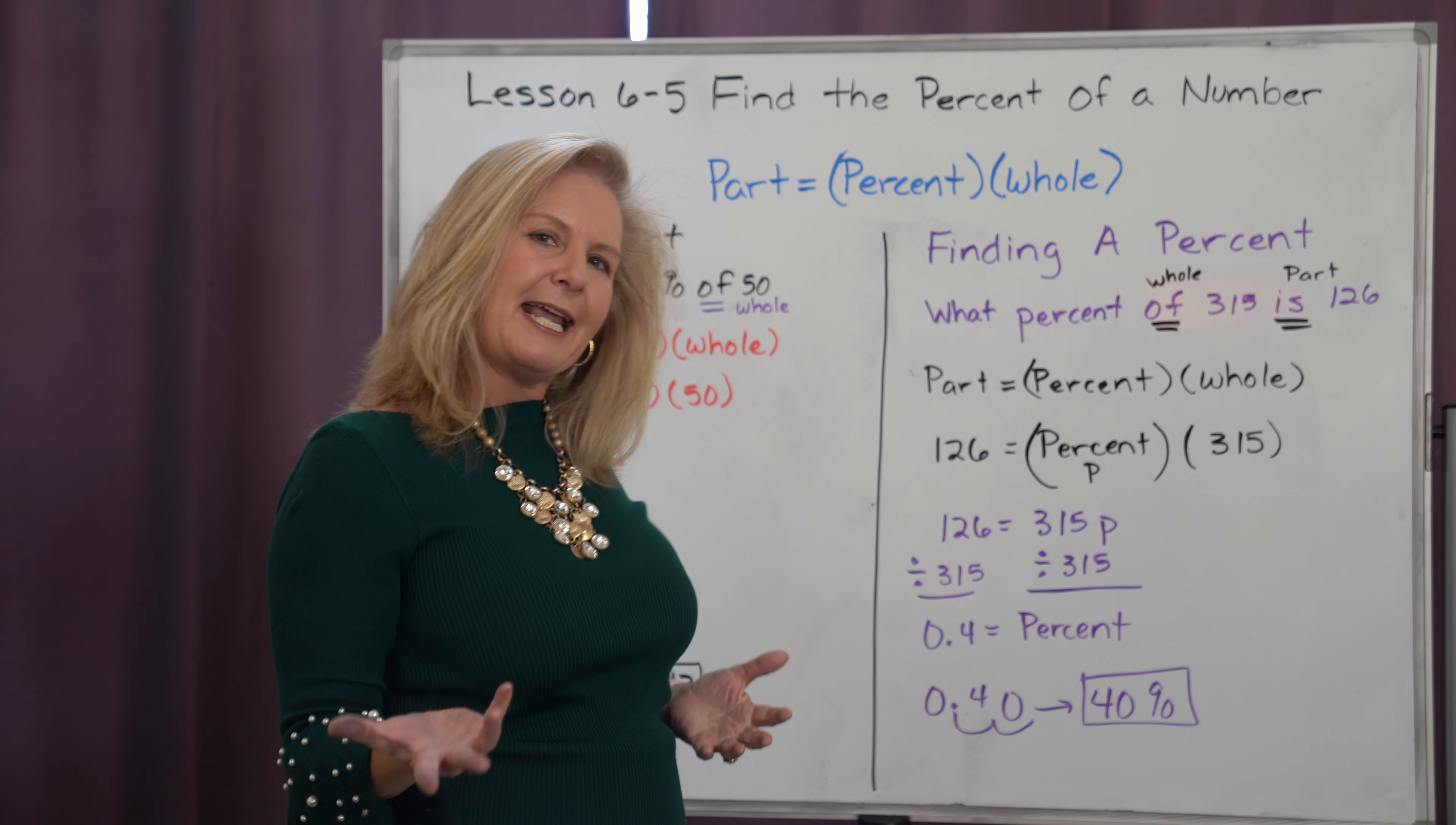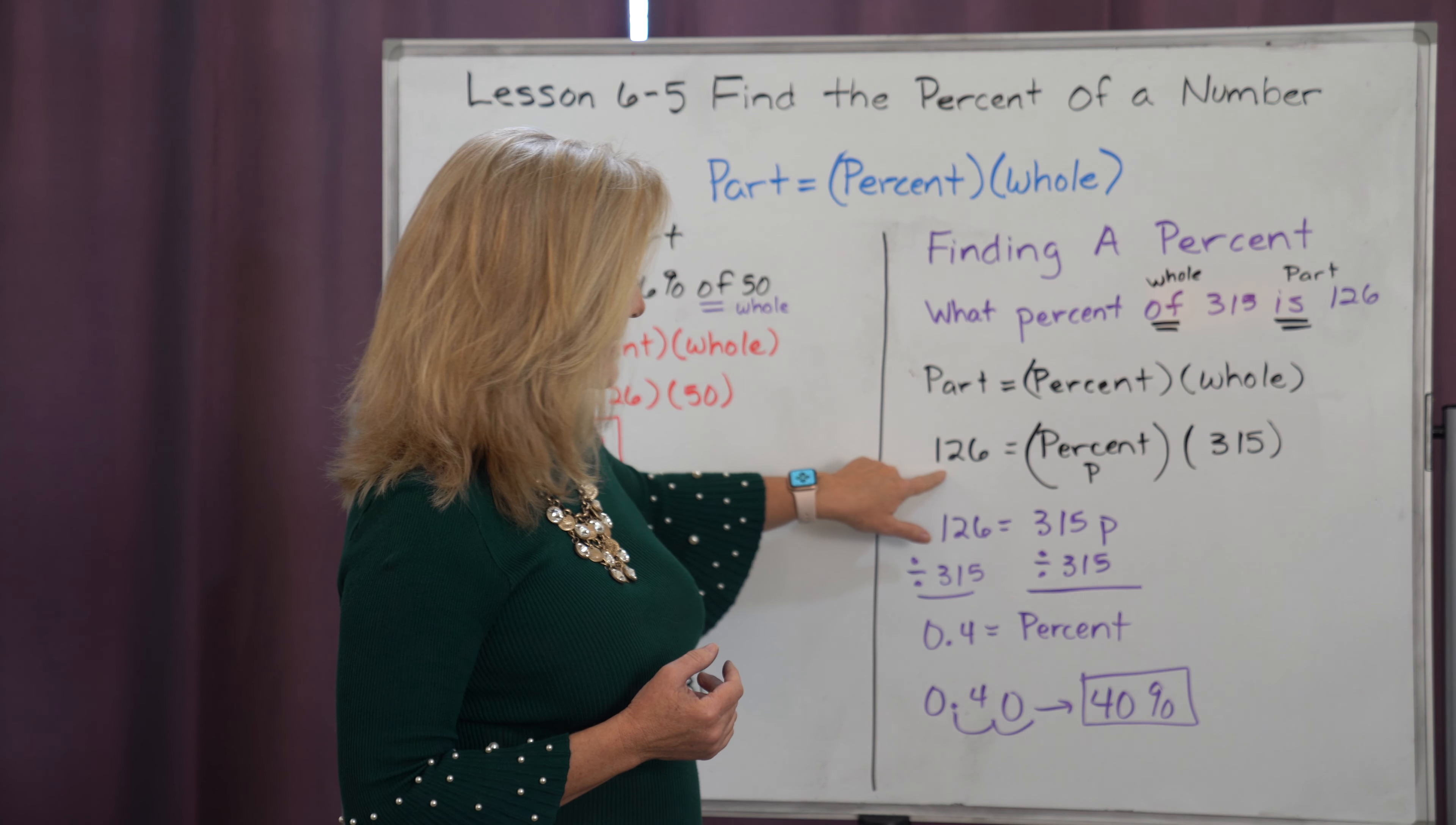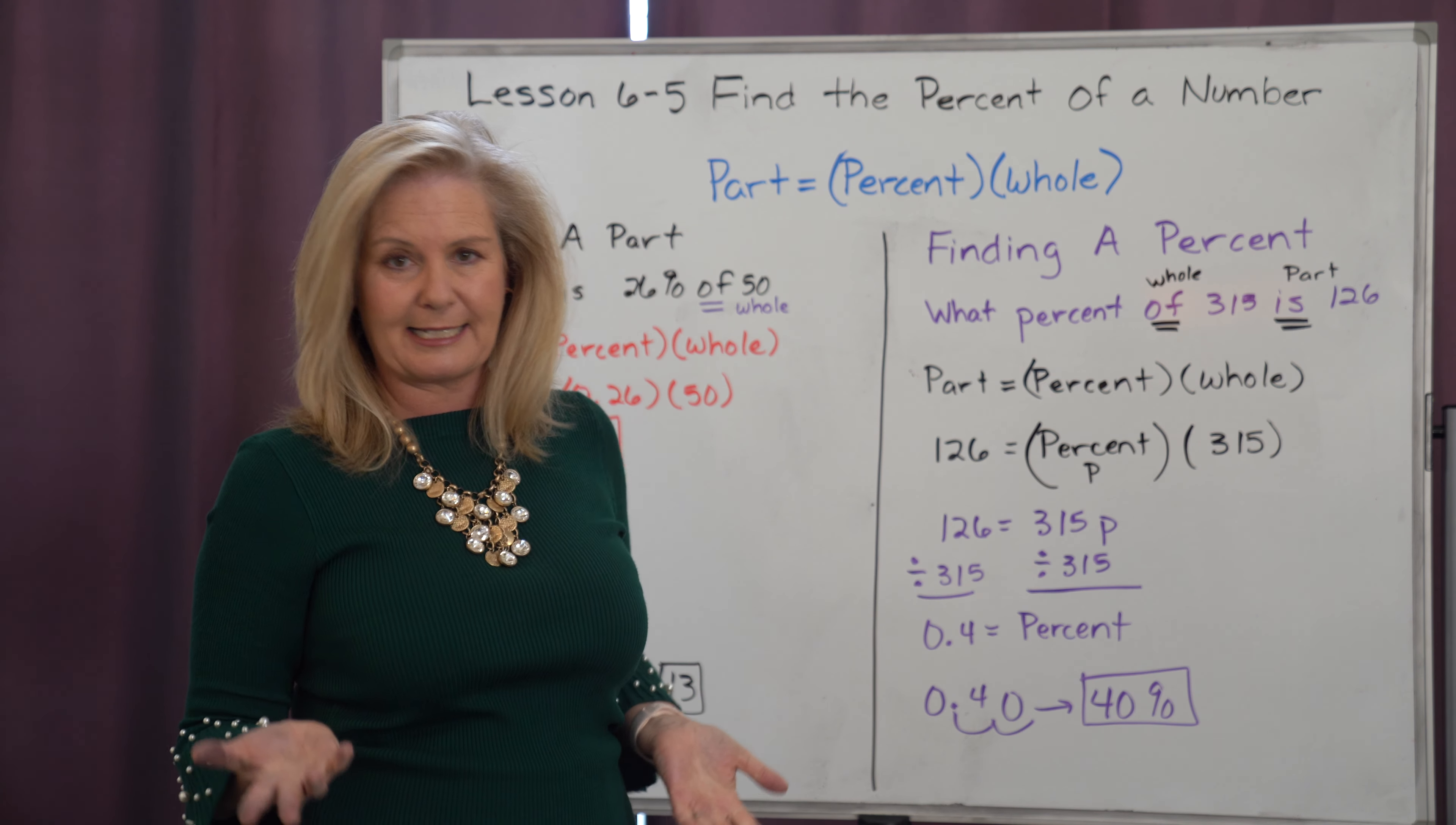And I know one has to be part, one has to be whole because I'm trying to find that percent. So I'm going to replace my part with 126. Now all I need to do is find my percent. Well I'm going to create an equation with that because I know 315 times a percent, I just change that percent to p to give me a variable.